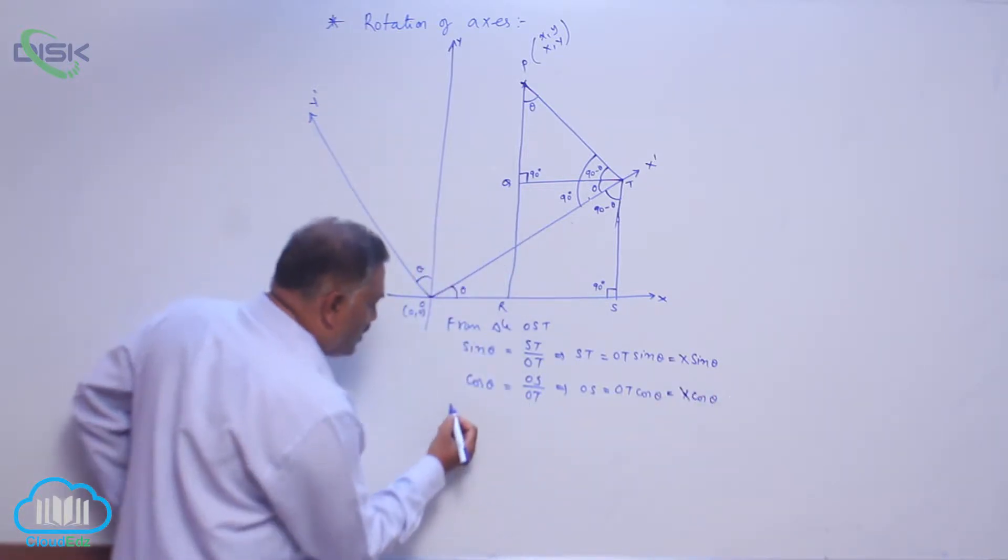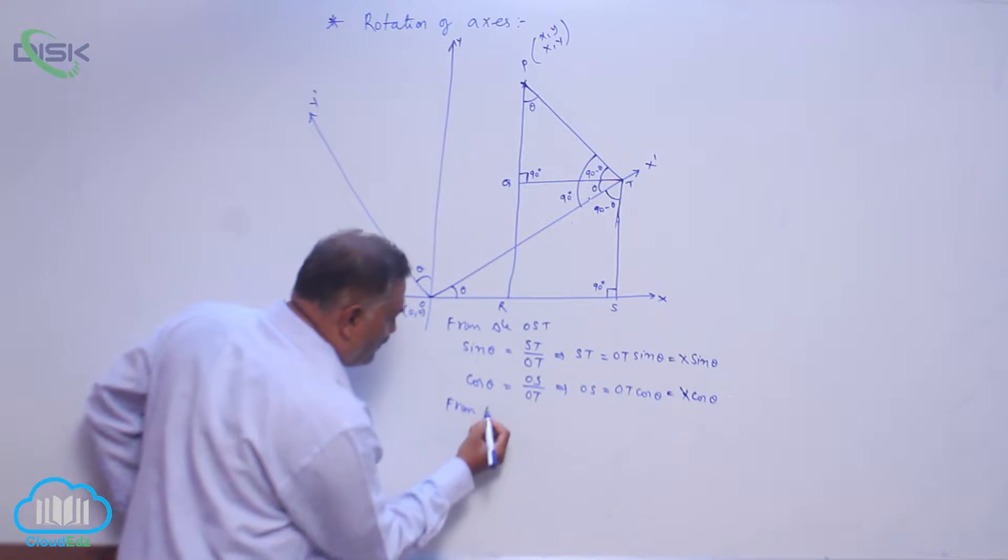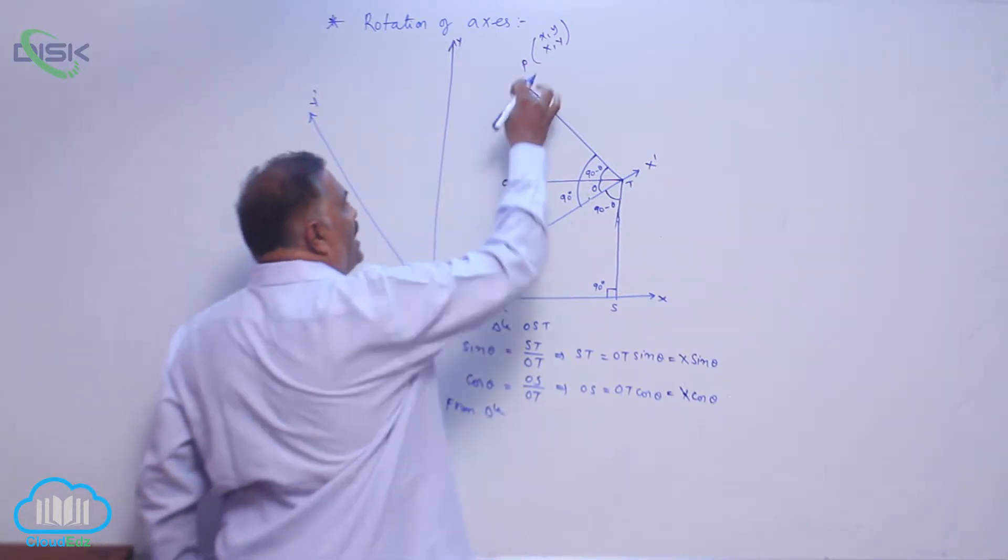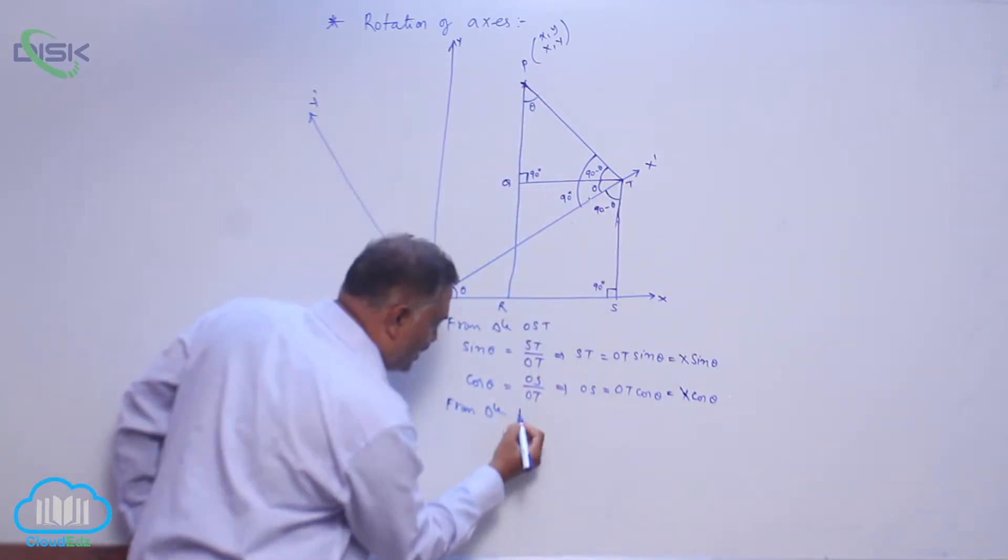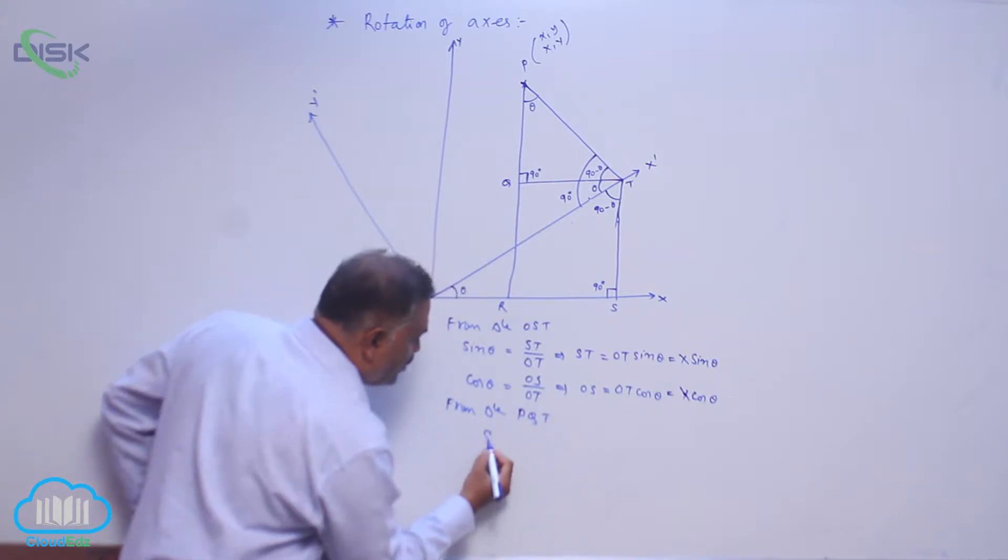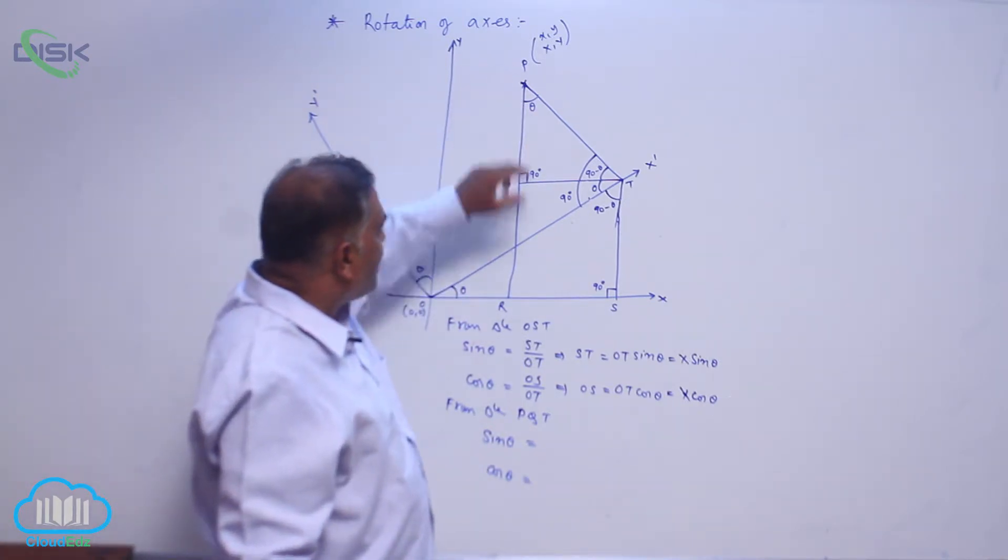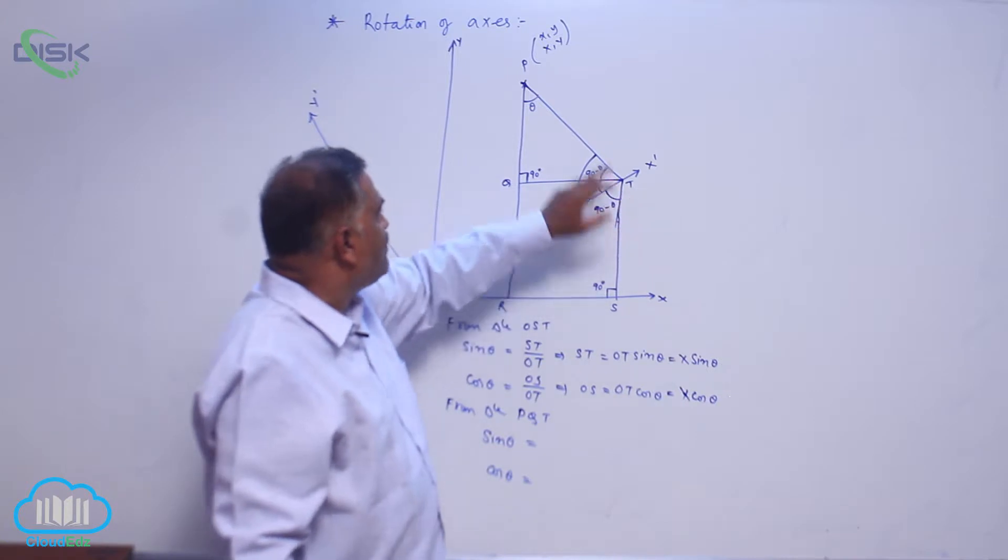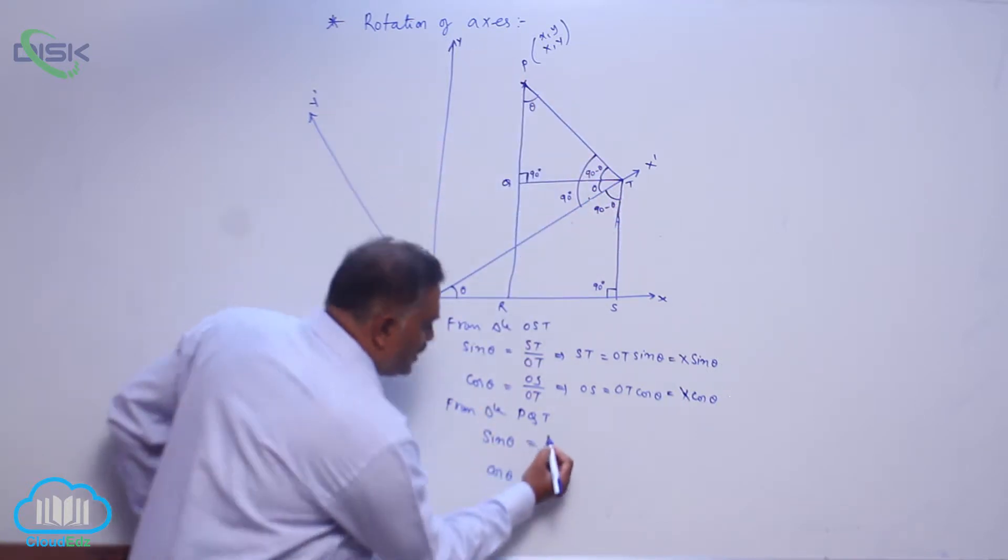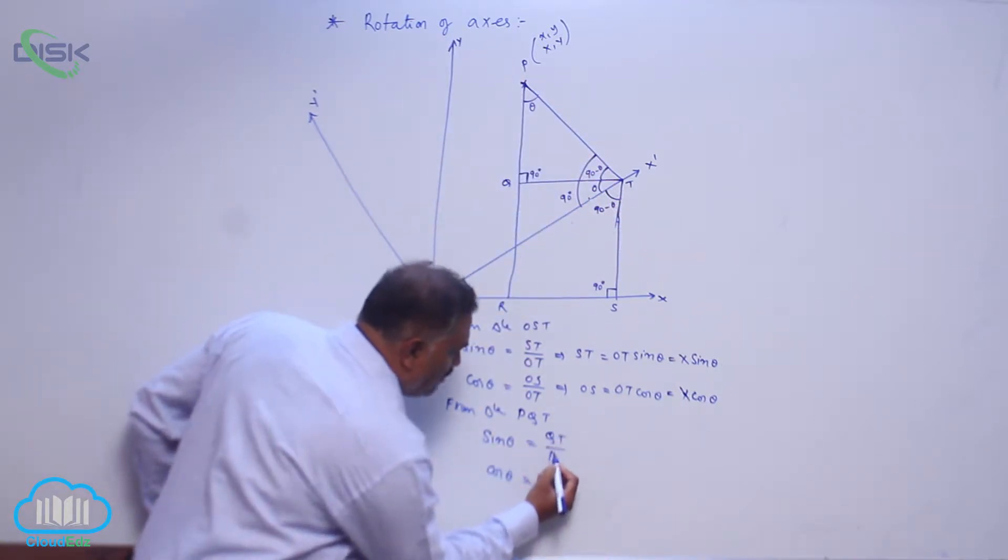Now again coming to triangle PQT, again you consider sin theta and cos theta. You can see sin theta is given by QT divided by PT. This is QT equals PT sin theta.